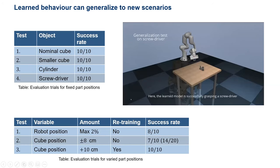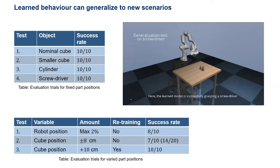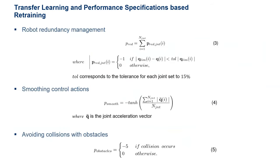In another case, we modify the cube's position in the plus or minus direction, and the robot successfully lifts it 7 out of 10 times. When the position was modified by a larger amount, we used the pre-trained weights from the previous task model and retrained — in 30 minutes of retraining, the robot is again able to successfully complete the task. Here we additionally apply the concept of transfer learning, reusing the weights and transferring them to the new task settings.